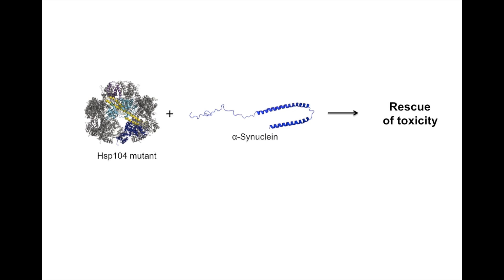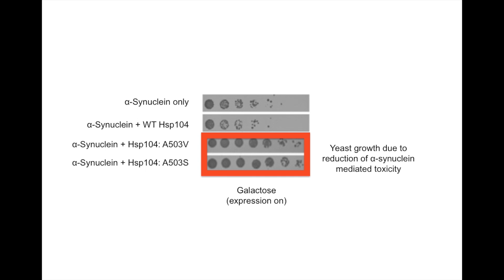Therefore, a recent study aimed to re-engineer HSP-104 to achieve potency against disaggregating alpha-synuclein amyloid fibrils. It was determined that mutations at the 503 position, from alanine to valine or serine, decrease alpha-synuclein toxicity in yeast.